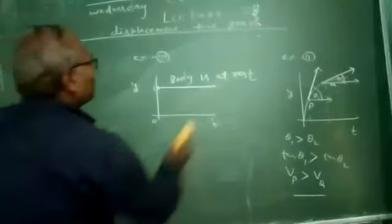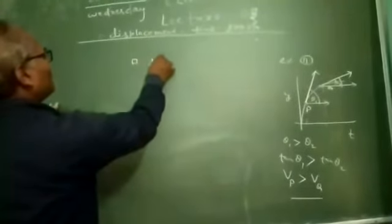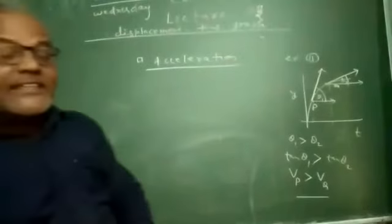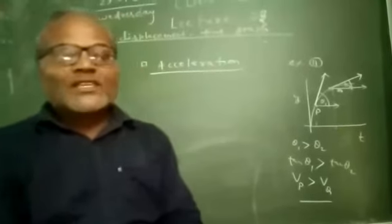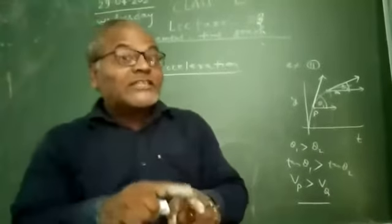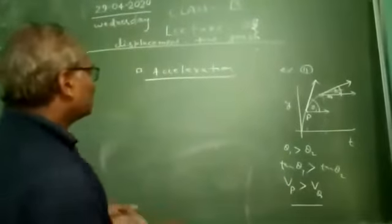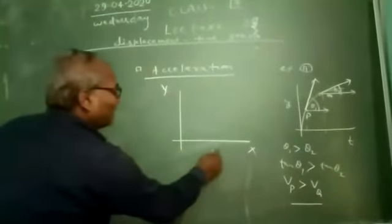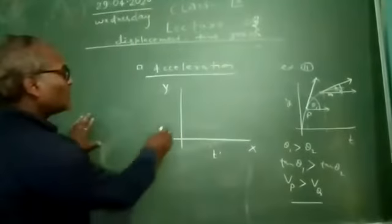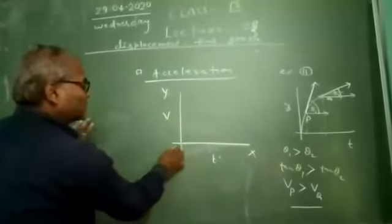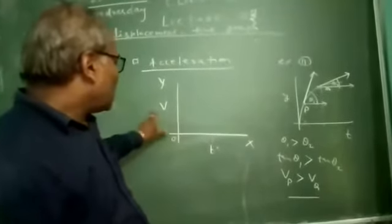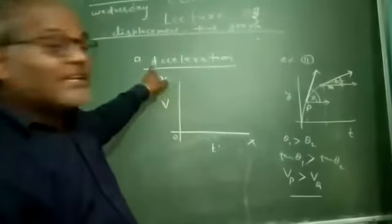Now I will introduce the term acceleration. Acceleration is defined as the rate of change of velocity, and by the help of a velocity-time graph we get the acceleration of a body. When time is plotted along the x-axis and velocity is plotted along the y-axis, the graph obtained is called the velocity-time graph. By the help of the velocity-time graph we get the acceleration.